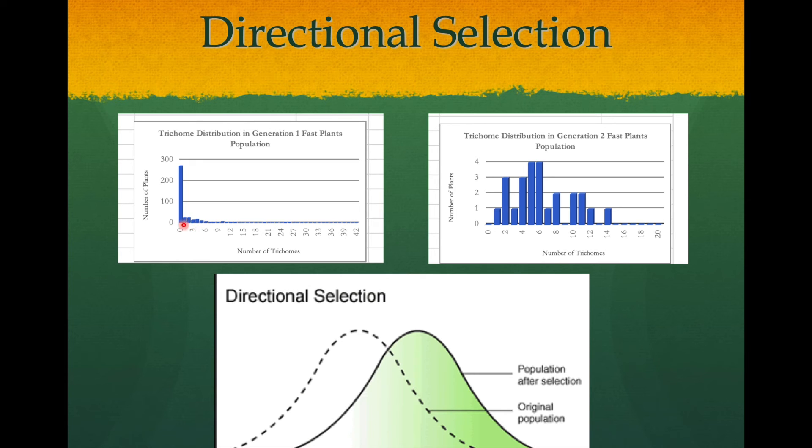With the data from last year, you can see generation one is on the left. Most of the distribution of trichomes is skewed to the left towards zero or very few trichomes. The second generation, since you already selected for the really hairy plants, you can see that it has shifted towards the right where the top of the curve is already over several trichomes. These two graphs represent directional selection. The original population is represented by the dotted line and the new generation population after selection is represented by the solid line. The bell curve shifted towards the right, towards one direction.